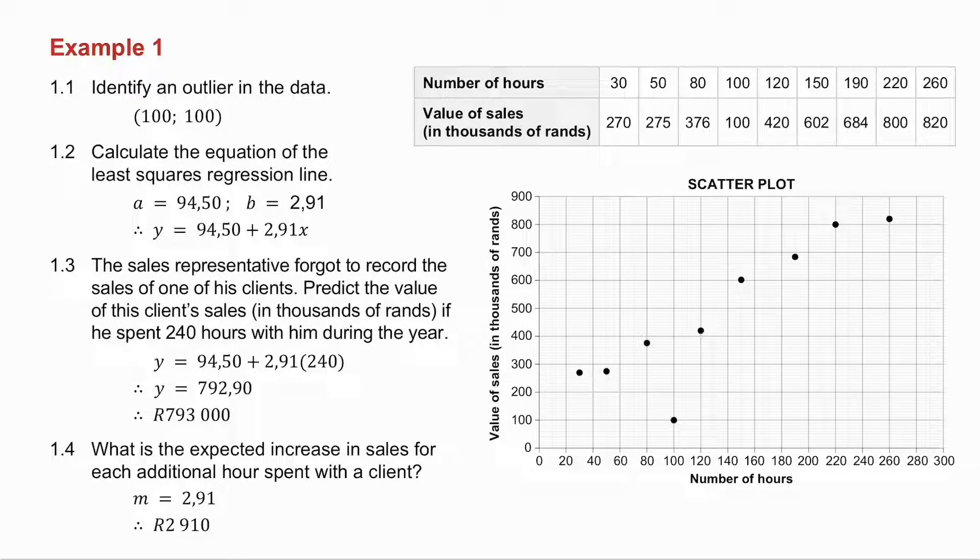1.4, what is the expected increase in sales for each additional hour spent with the client? Now that is simply asking you, what is the gradient of the least squares regression line? Because the gradient is the value of the sales per hour. Your gradient is 2.91, so the expected increase is 2,910 rand.